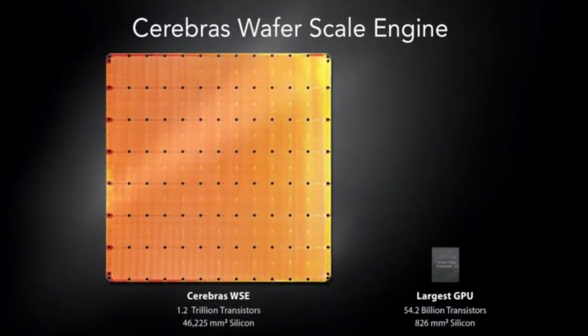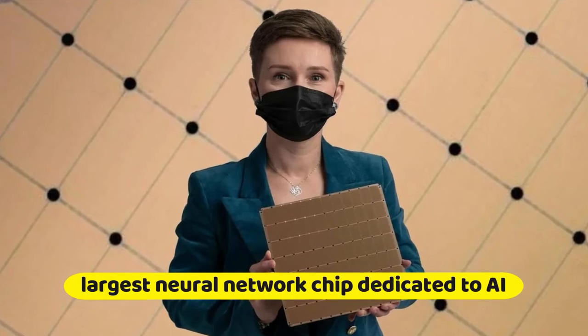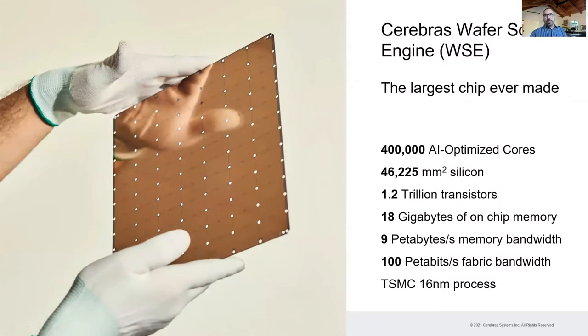The Cerebrus wafer scale engine, WSE, holds the world record for the largest neural network chip dedicated to AI ever built in human history. In 2019, Cerebrus system unveiled its first generation chip. The Cerebrus WSE is 46,225 square millimeters and contains over 1.2 trillion transistors.